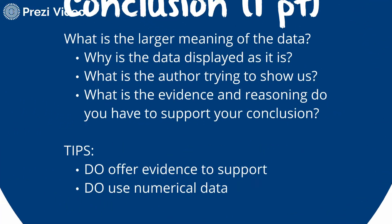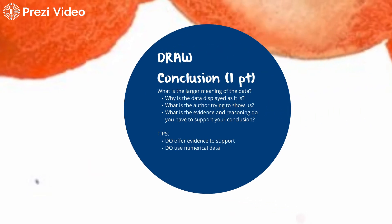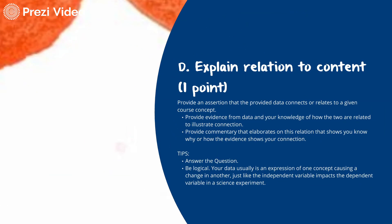Now we get to drawing a conclusion — the C point. This gets at the larger meaning of the data. We want to think about why the data is displayed the way it is, what the author is trying to show us, and what evidence and reasoning supports our conclusion. You always need numerical data to help support your assertion, so make sure you're continuing to provide numerical data while repeating the prompt as a statement and taking a position.